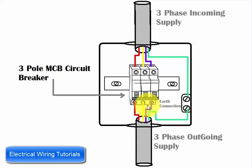But before you install or wire the three-pole MCB circuit breaker, first make sure you switch off your main switch or your main circuit breaker from where this supply is coming.